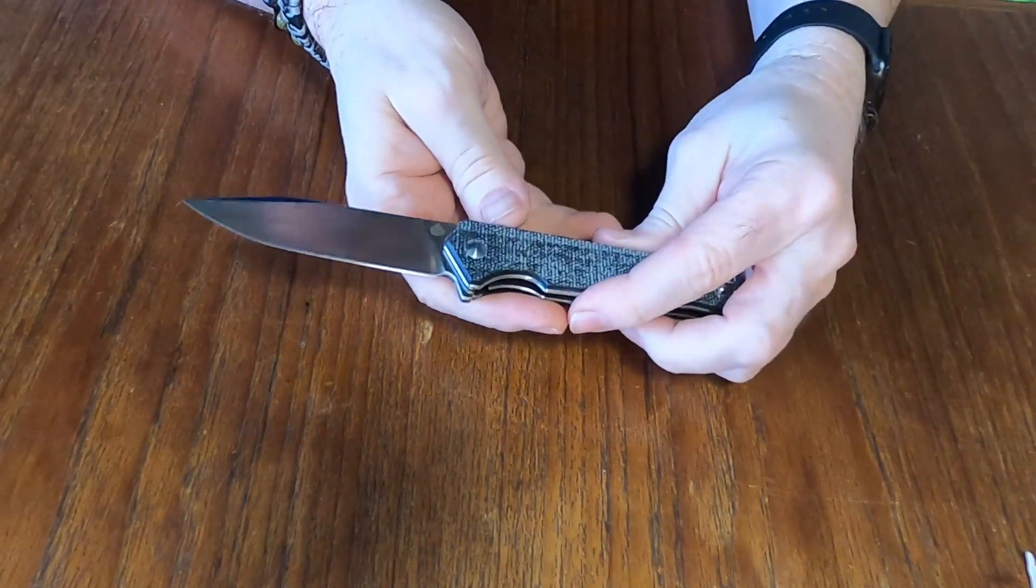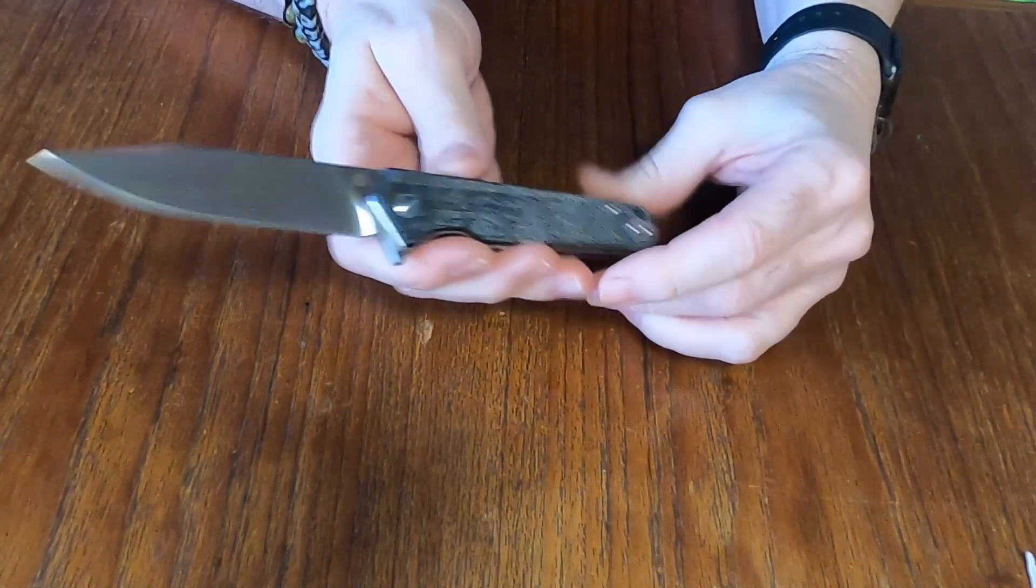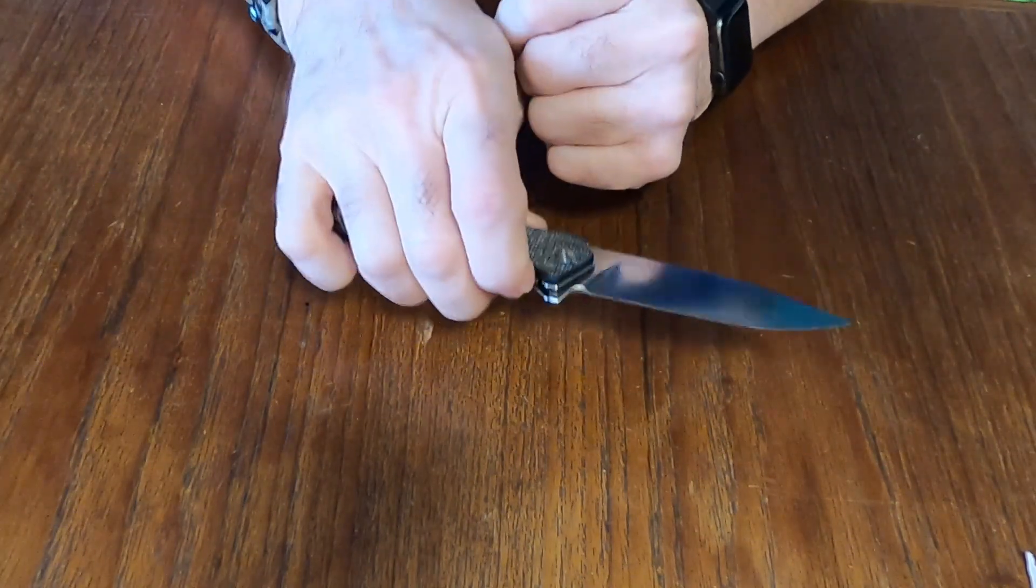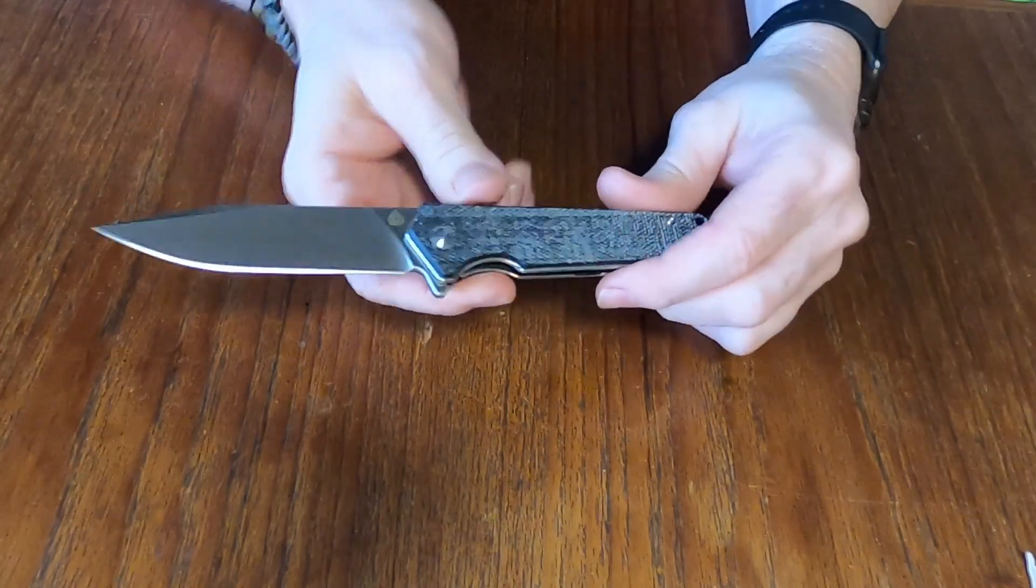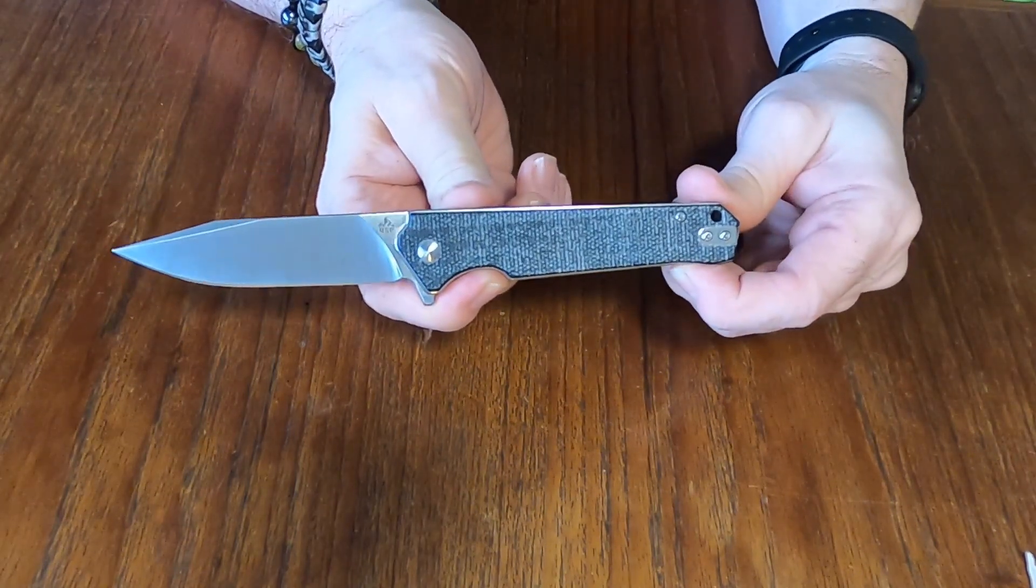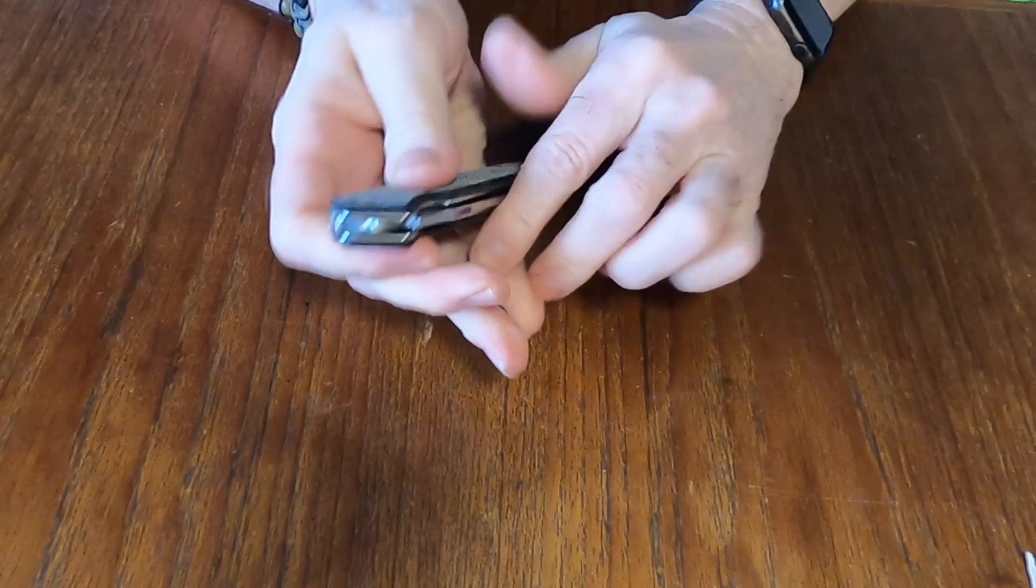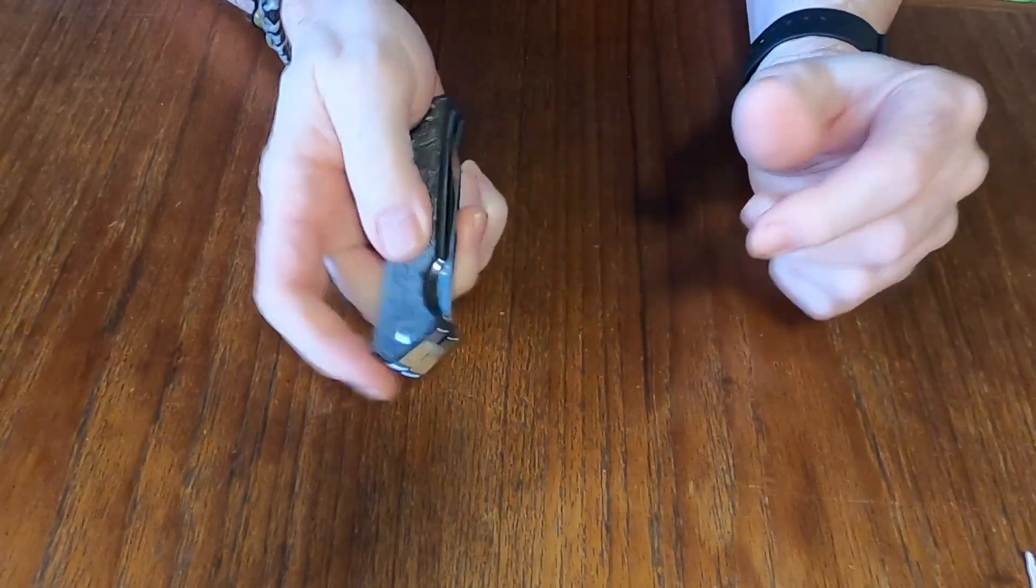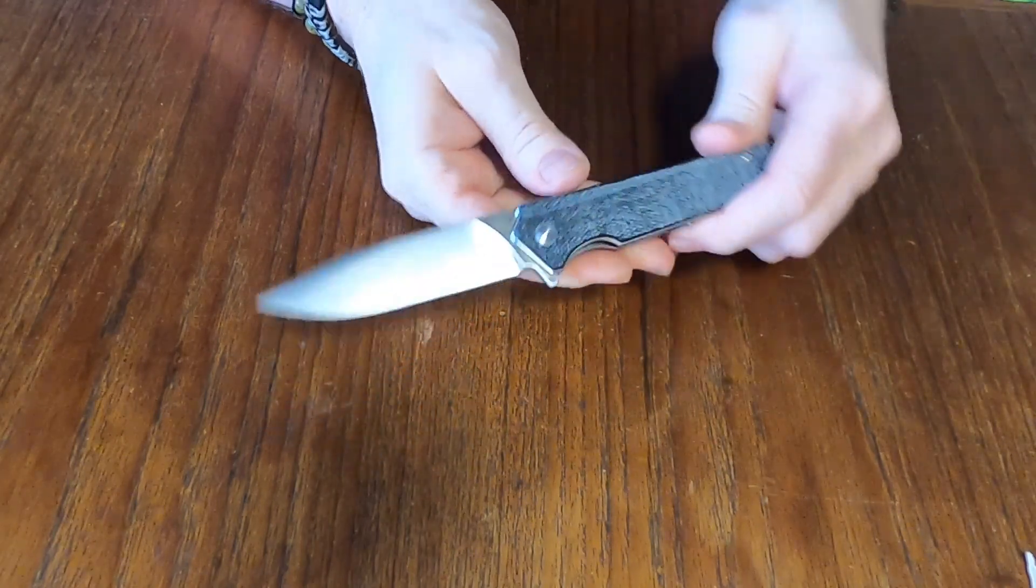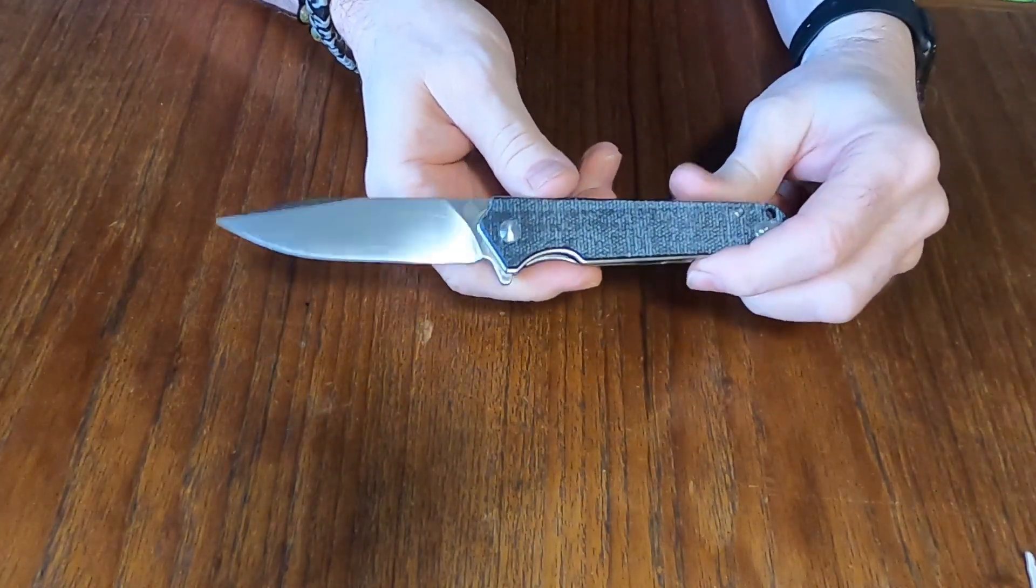The Mamba boasts a blade length of 3.75 inches. Open it is 8 inches and closed it is 4.45 inches. The steel on this is D2 steel with a clip point blade.